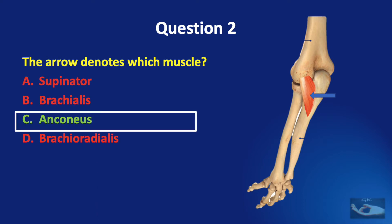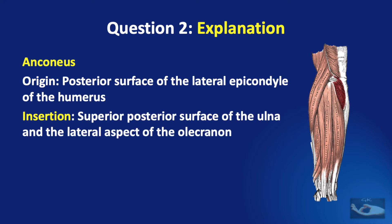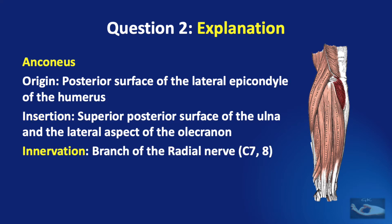The correct answer is the anconeus muscle. The anconeus originates from the posterior surface of the lateral epicondyle of the humerus and inserts on the superior posterior surface of the ulna and the lateral aspect of the olecranon of the ulna. It is innervated by a branch of the radial nerve with a root value of C7-8.